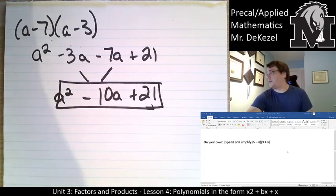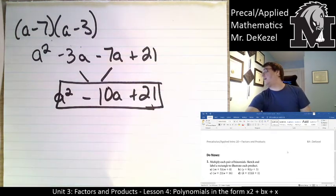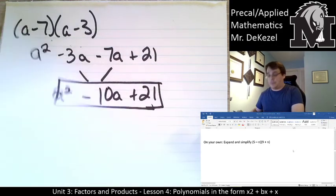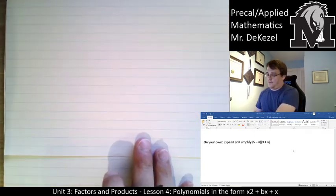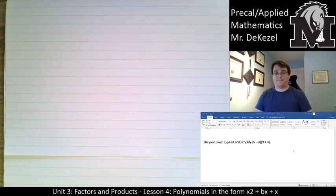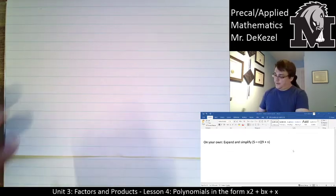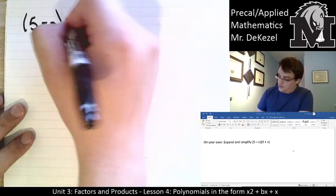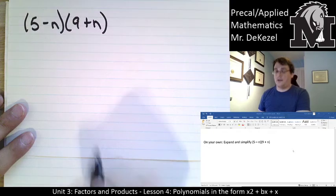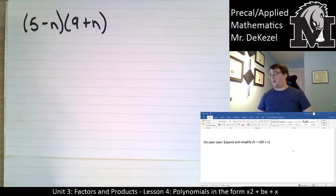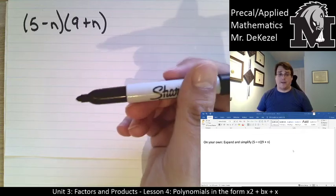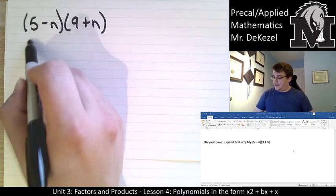There's one left for you to do on your own, and then it is some do-nows for you after that. So give it a pause, and when you're done, come back and we can do it together. All right, let's get it done here. Here, 5 minus n and 9 plus n. That is my question. We're going to expand and simplify to make a trinomial. It doesn't matter that the n's are in the back part now, we're just going to write it out and then flip it around however we need.